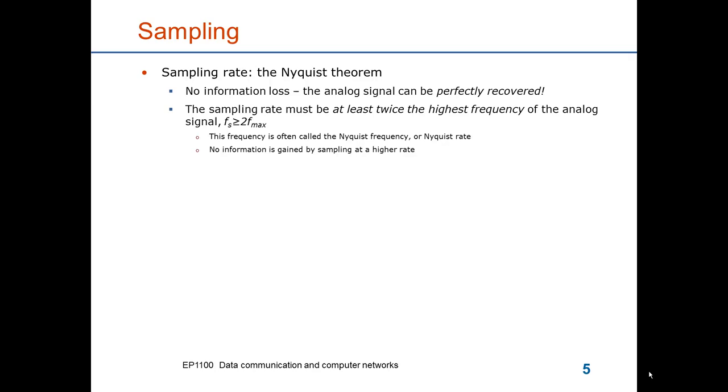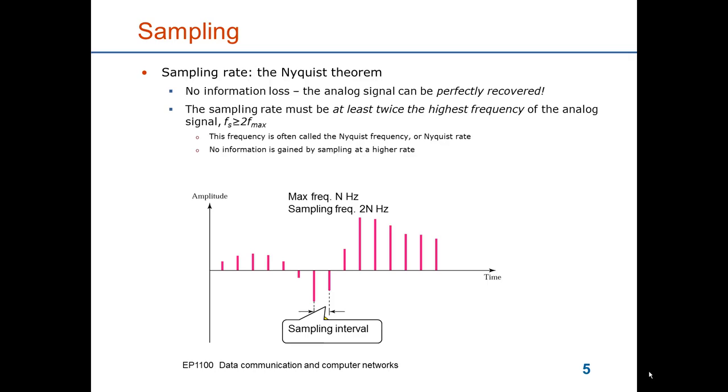This frequency is often referred to as the Nyquist frequency or Nyquist rate. The Nyquist frequency is both sufficient and necessary to recover the analog signal, and there's no gain in sampling at a higher rate. This example here shows a signal which has max frequency n Hz. So we need to sample it at least 2n Hz. The interval between two values is the inverse of the sampling frequency. So in this case, it's 1 over 2n seconds.